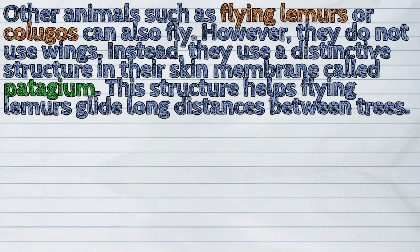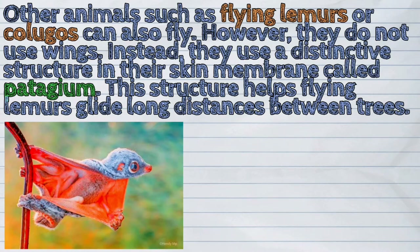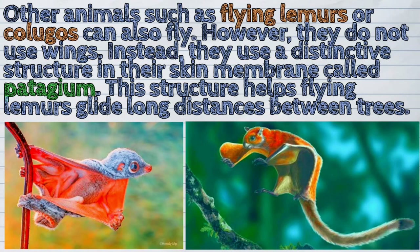Other animals such as flying lemurs or colugos can also fly. However, they do not use wings. Instead, they use a distinctive structure in their skin membrane called patagium. This structure helps flying lemurs glide long distances between trees.